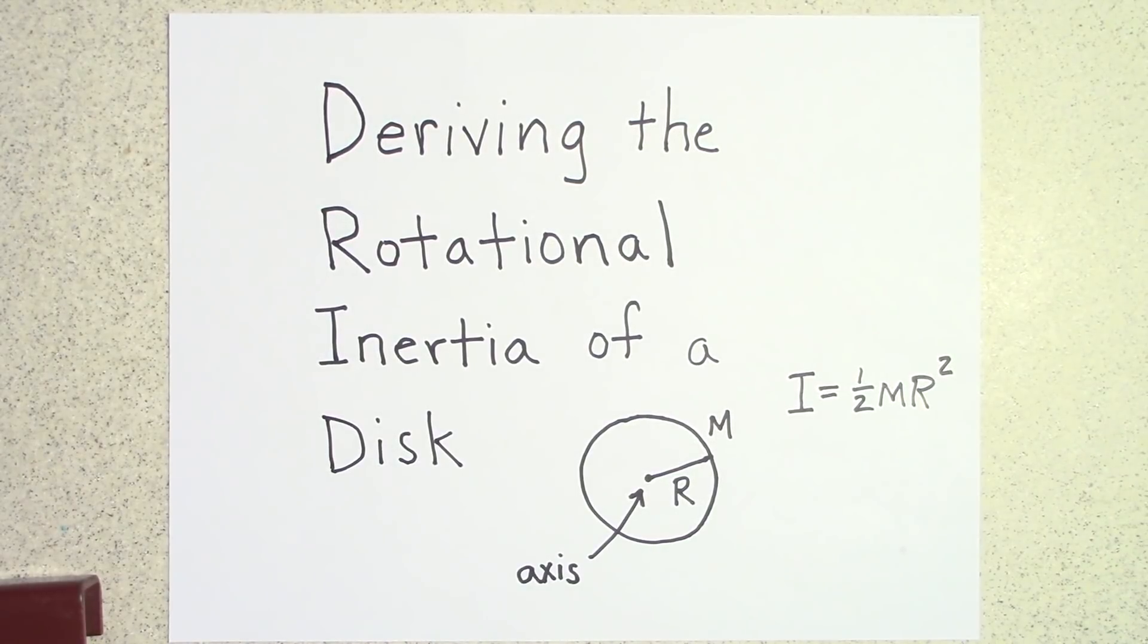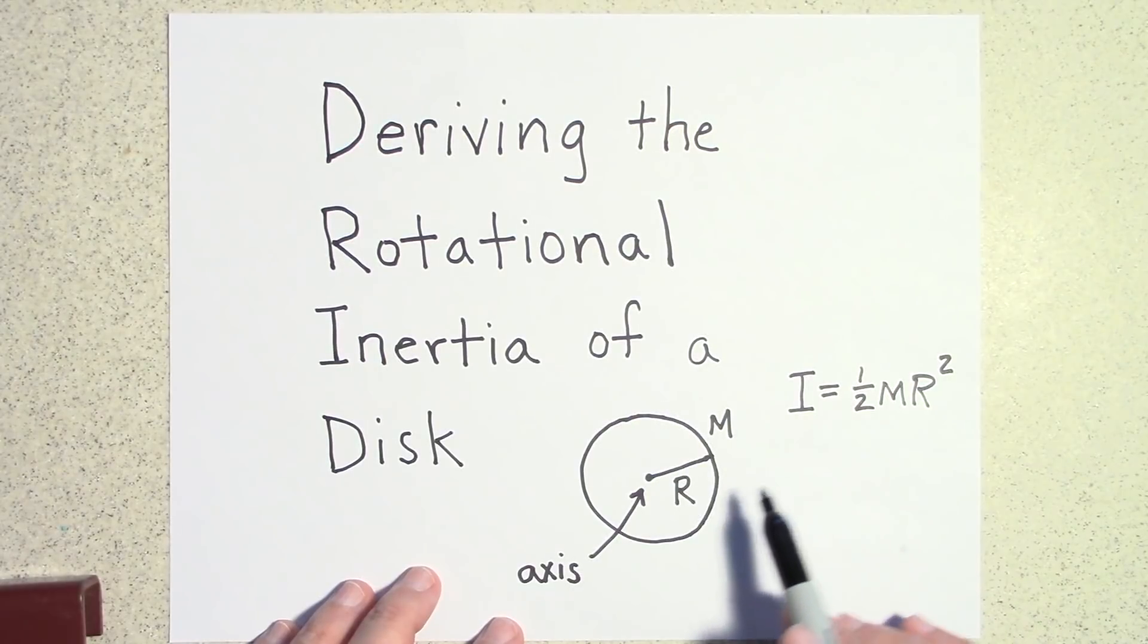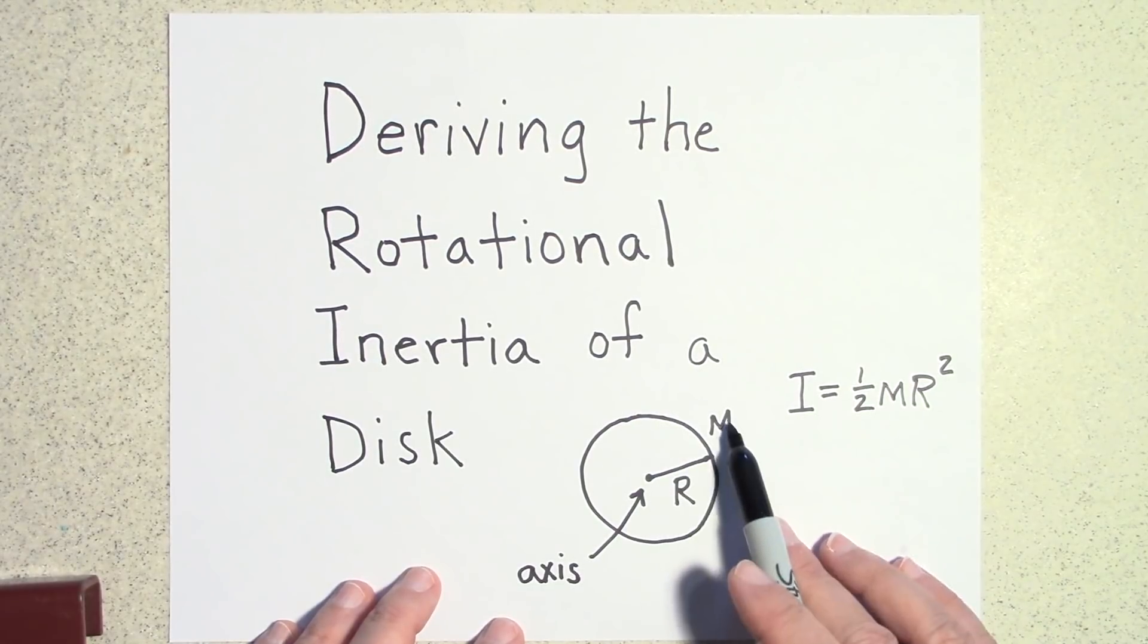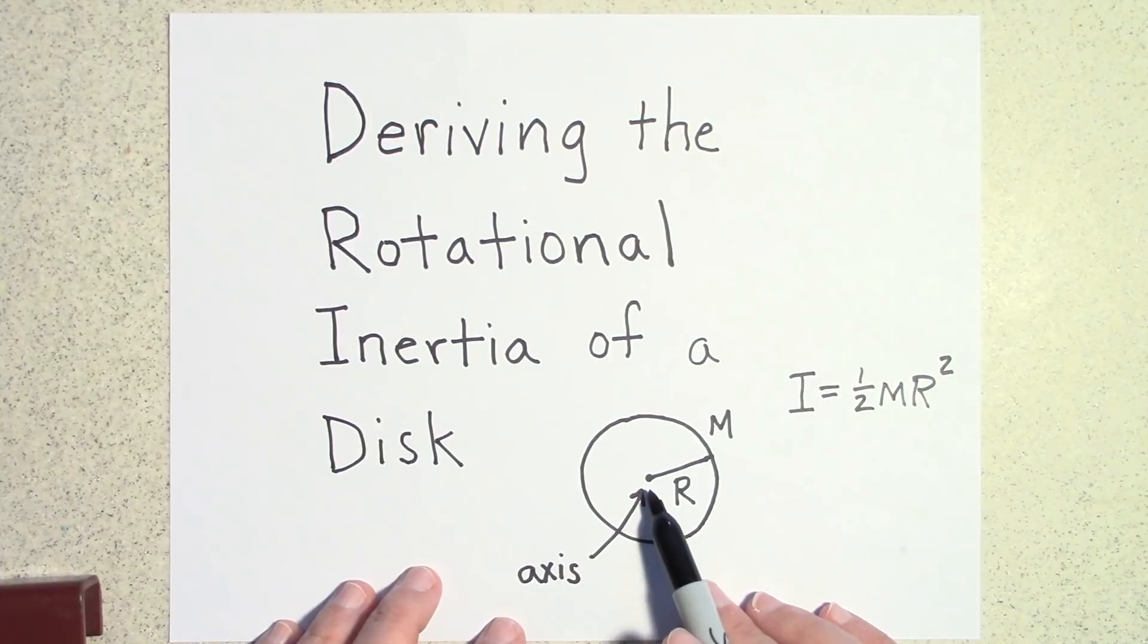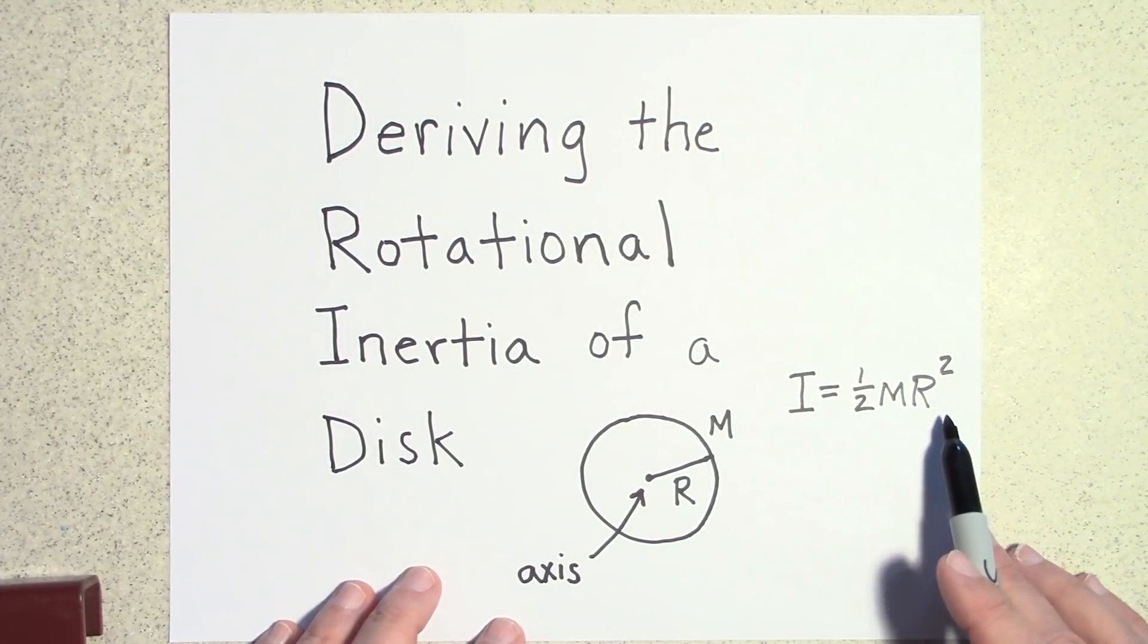So I'm going to just tell you what the answer to this is in case that's all you want to know. You don't want to see the derivation. To get the rotational inertia of a disc of mass m and radius r about an axis at its center, it's just going to be I equals one half m r squared.